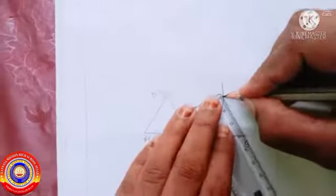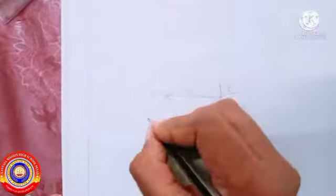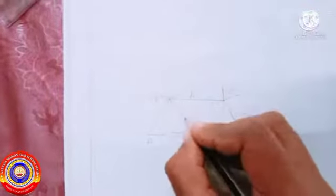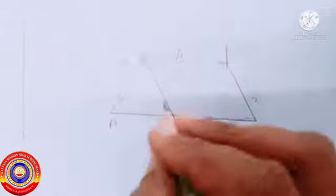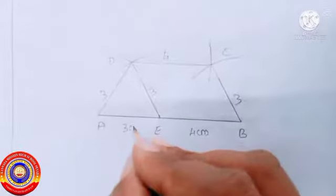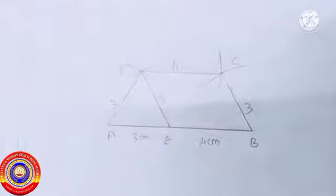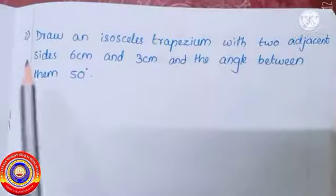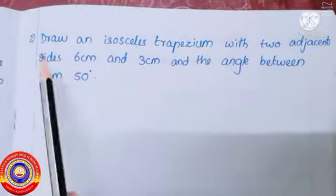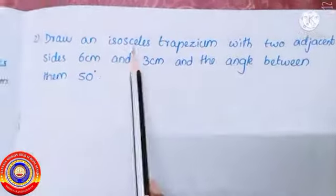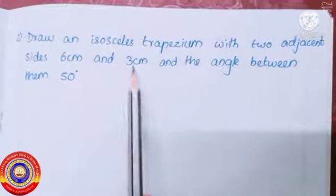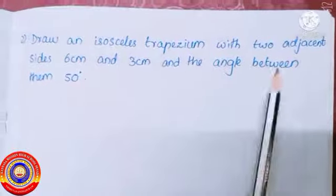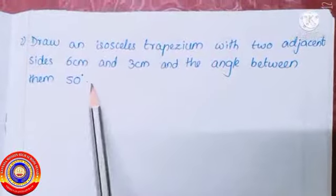Join all these points together and complete the isosceles trapezium. This is the required isosceles trapezium with parallel sides seven centimeter and four centimeter and equal sides three centimeter each. Second question: draw an isosceles trapezium with two adjacent sides six centimeter and three centimeter and the angle between them 50 degrees.